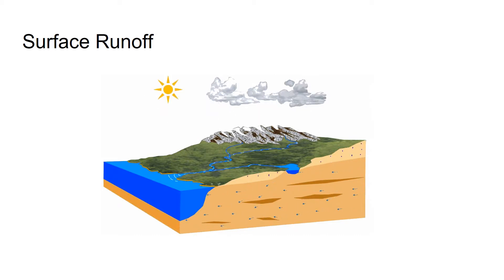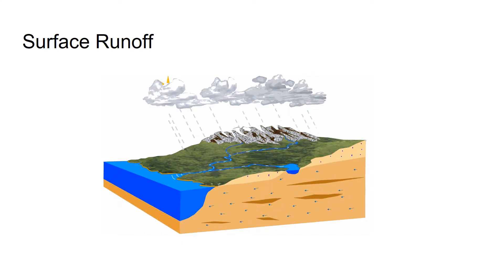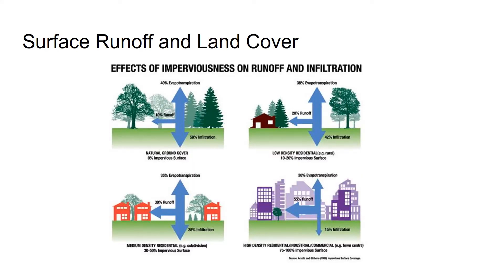The less the water can infiltrate the soil, the more runoff will occur. Infiltration and runoff are directly connected, and the more infiltration a surface provides, the less runoff the surface will have. For example, with natural ground cover such as vegetation and agriculture, runoff is as low as 10% of the rainfall. However, in a more urbanized area, it can go up to 55% of the total rainfall.